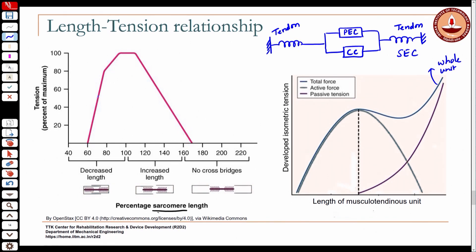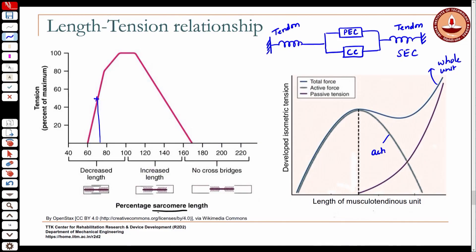At the sarcomere level, we took the sarcomere at a particular length and saw how much tension it could develop — that is how you get different points on this curve. We would not go into the experimental details; you keep the sarcomere at a particular length and see how much force is developed. At lengths less than the resting length, only the active component can develop tension — there is no contribution from the passive elastic component.